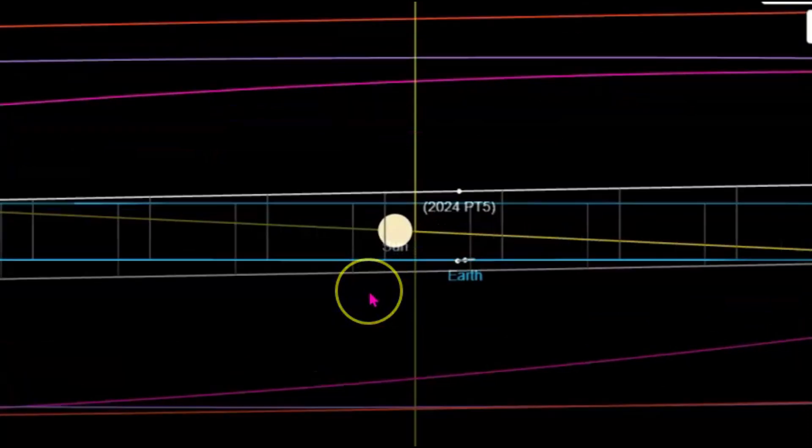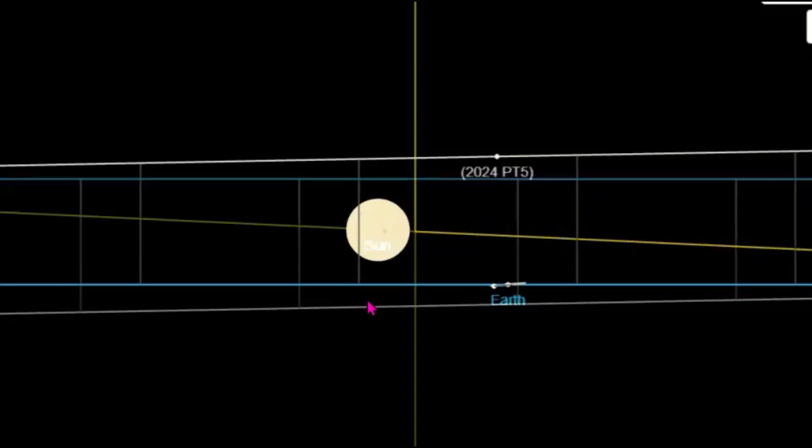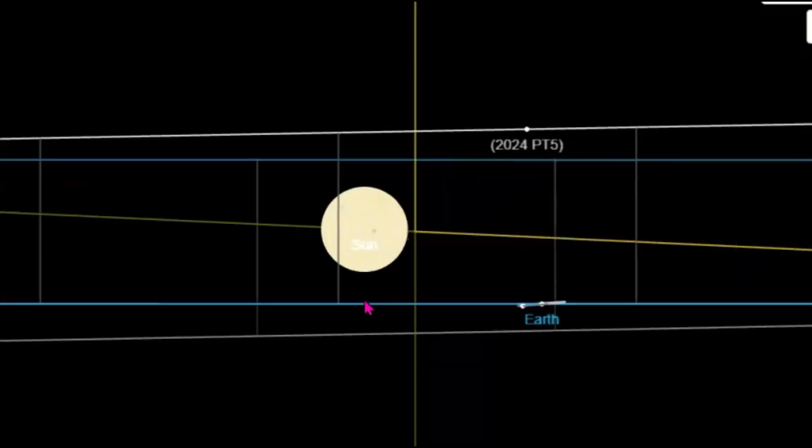And if you're wondering if you can see this new asteroid, well, you can't. Evidently, it's so dim and it's so small that even with a telescope, you won't be able to see it.